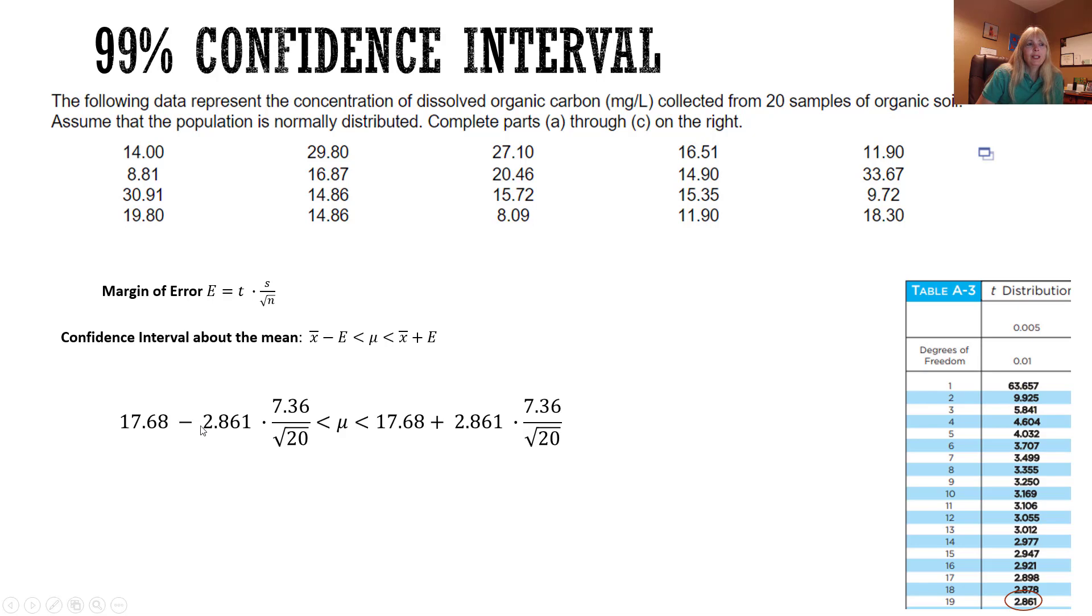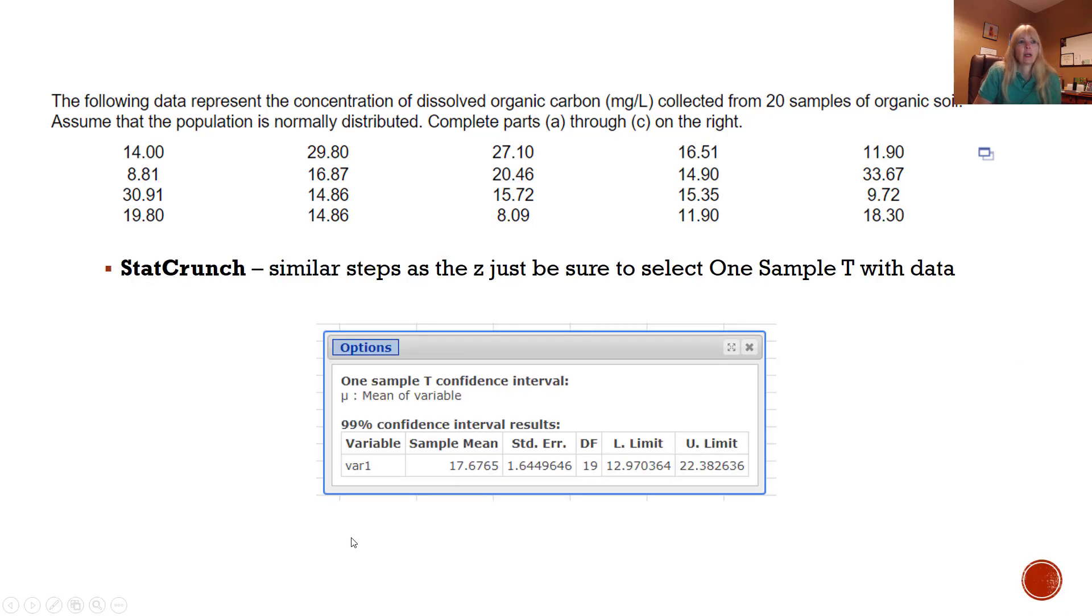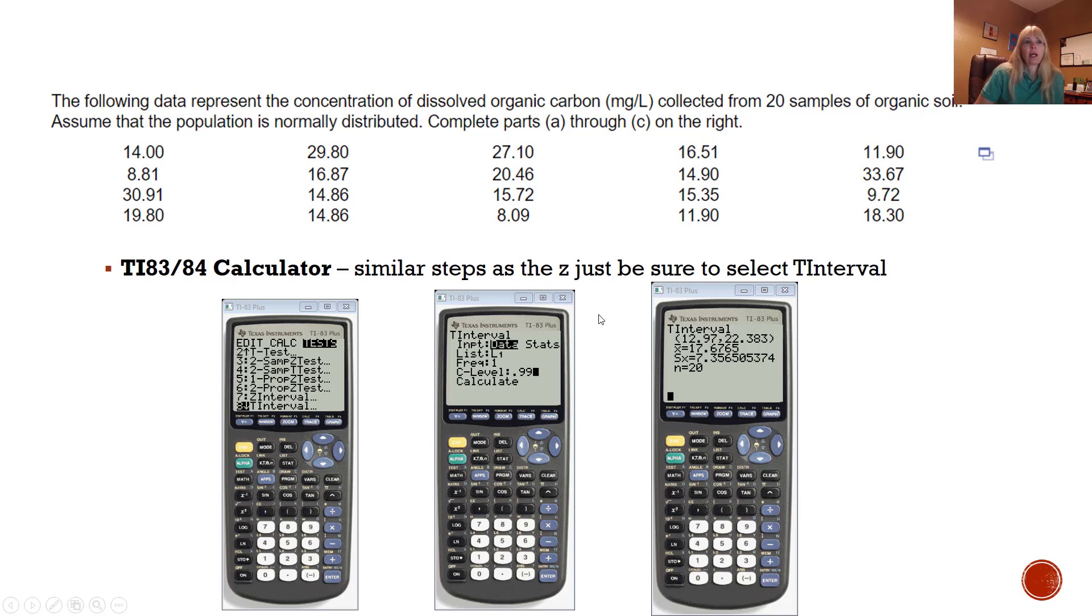I can go through and do the same thing in StatCrunch, exactly like the Z, just be sure you select T, one sample with data. You get the same thing. Calculator, again same thing, just be sure you type all that data in your calculator. Then you go to stats, test, T interval, your data, and the only thing you'll have to change is the point nine nine. The only good thing about the calculator is if it asks you, okay well now what if it's a 95 percent confidence interval, we already have the data in there so you just have to come in here and change that number.